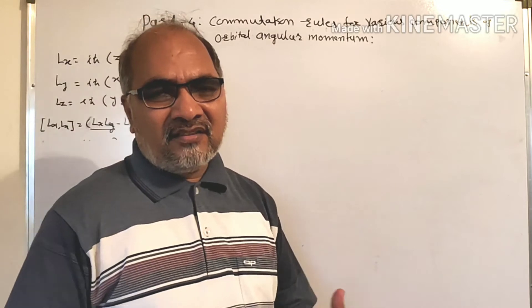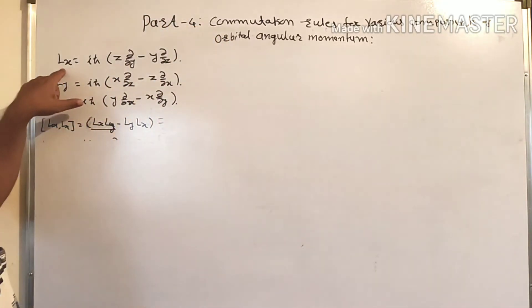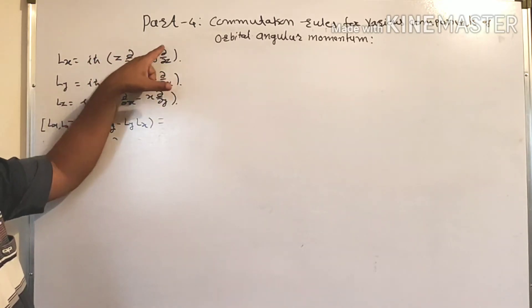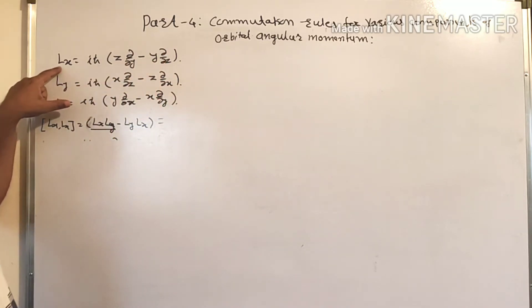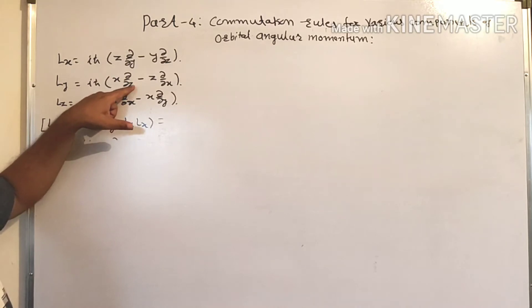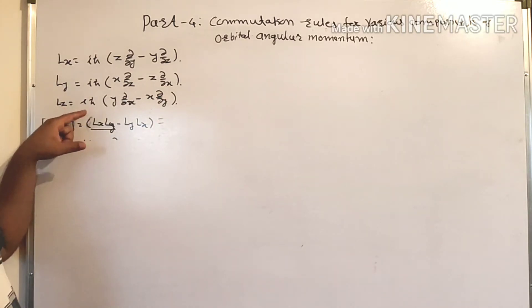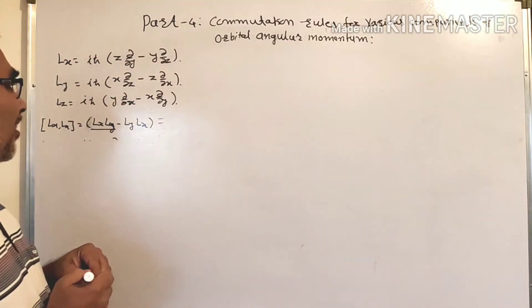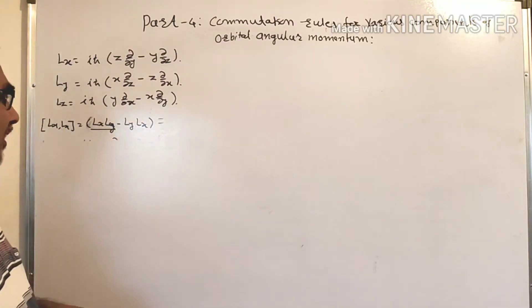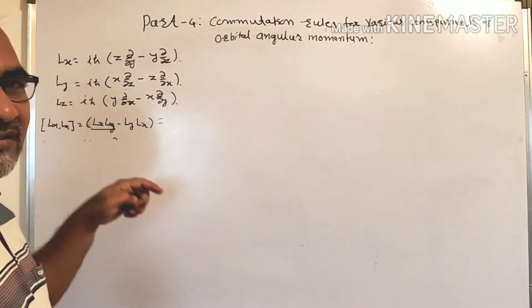Now there are different orbital angular momentum components, which we are already familiar with. Lx is equal to iħ(z ∂/∂y − y ∂/∂z). The Ly component is iħ(x ∂/∂z − z ∂/∂x), and the Lz component is iħ(y ∂/∂x − x ∂/∂y). Now we are going to see the relation between Lx and Ly.